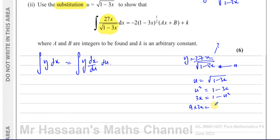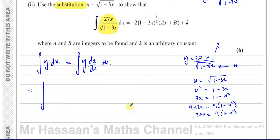To get 27x, multiply both sides by 9: 27x equals 9 times (1 minus u squared). So y can now be replaced — the numerator 27x becomes 9 times (1 minus u squared), and the denominator, the square root of 1 minus 3x, becomes u. We still need to find dx/du.